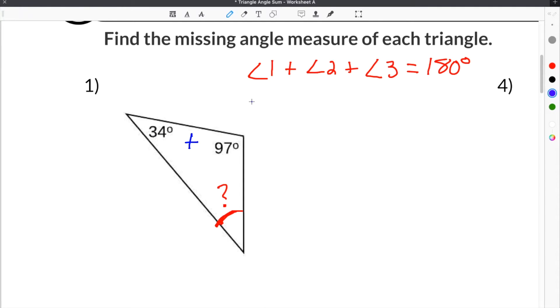so 34, which we're going to say is Angle 1, plus Angle 2, which is 97, plus Measure of Angle 3, which we don't know, is equal to 180 degrees.